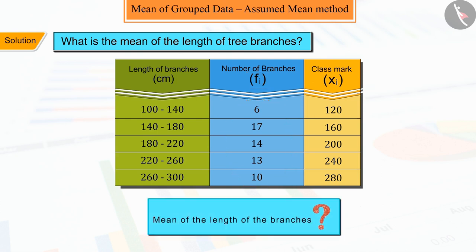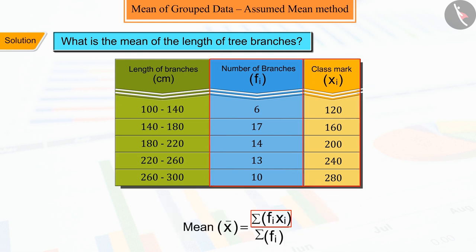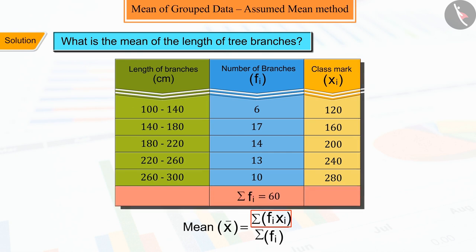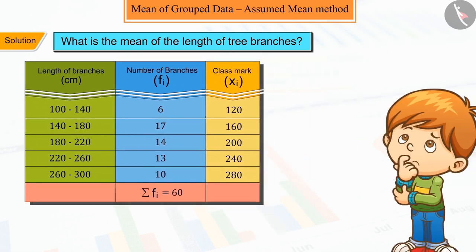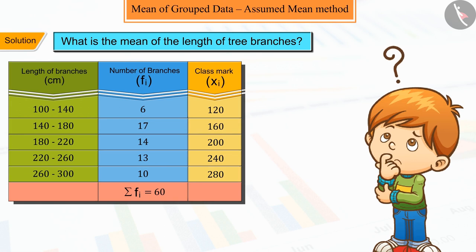Since we have to find the mean of the lengths of the branches, which can be calculated by dividing the summation of fi·xi by the summation of fi, but it takes more time. So, how can we make it simpler?